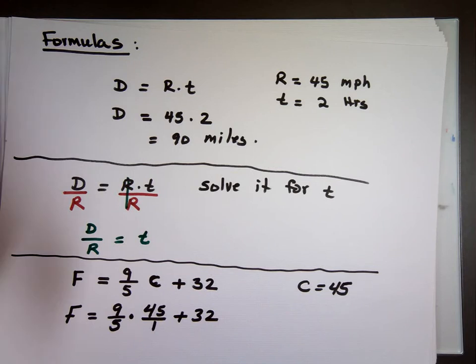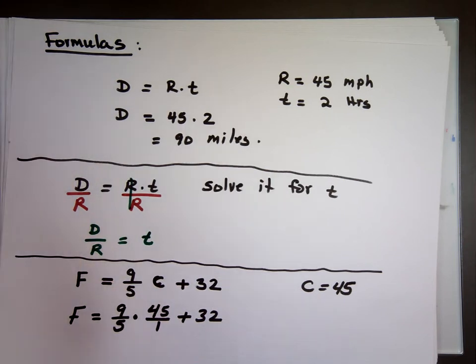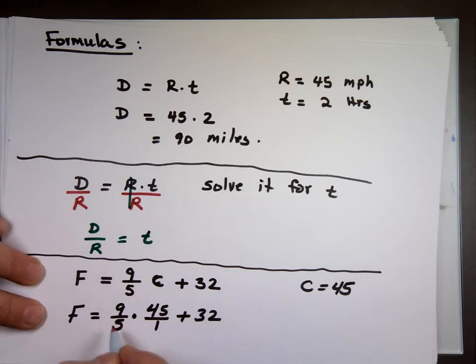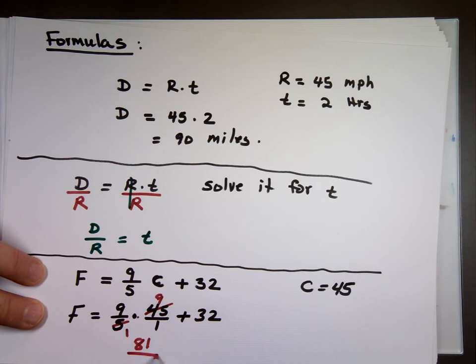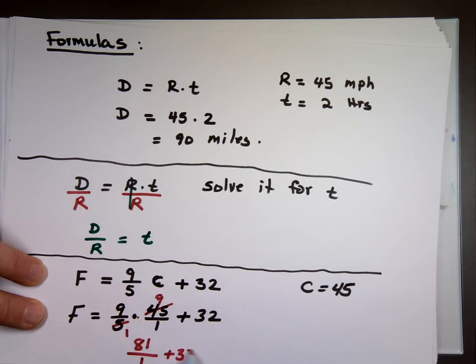Now, I made it a fraction, 45 over 1, why? Because when I'm multiplying a fraction by a number, I want to make them both fractions. And I tend to simplify first, then multiply. Top and bottom by 5, this is 1. By 5, this is 9. What is 9 times 9? 81 over 1 times 1, 1 plus 32. That's 81 plus 32, which is 113 degrees.